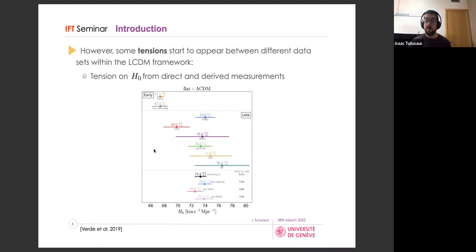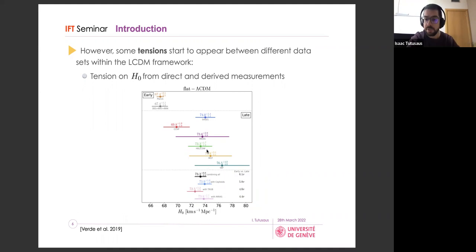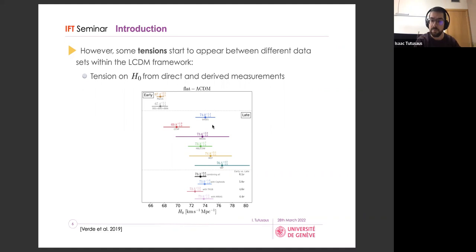There is another tension which is even more severe: the Hubble constant tension. Late-time direct measurements — using type Ia supernovae calibrated with Cepheids (the SH0ES constraint), strong lensing measurements, or the tip of the red giant branch — are significantly higher than values derived from Planck or from BBN priors. The tension is close to five sigma using the latest SH0ES constraints.